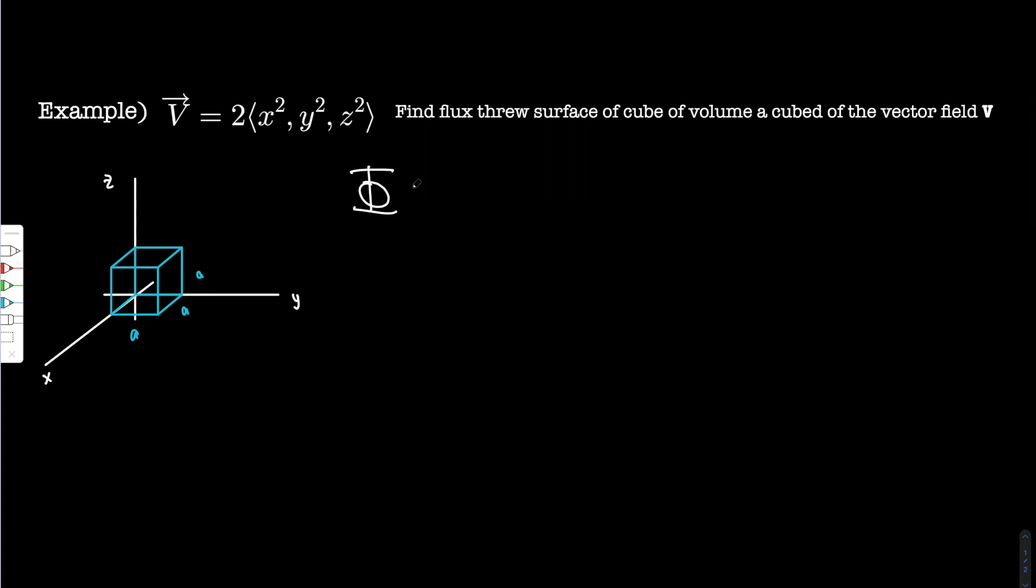So we're going to calculate the flux, usually denoted as capital phi, of this field, cube n. This is the cube of radius a. So let's start.